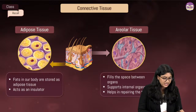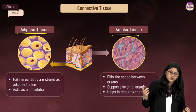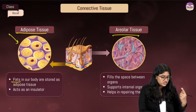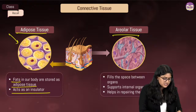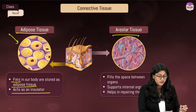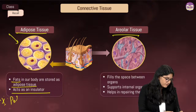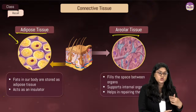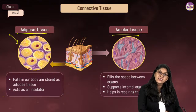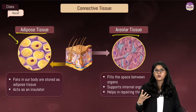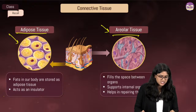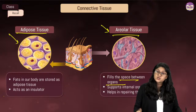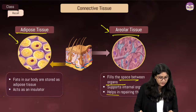Last but not the least, let's talk about connective tissue. Adipose tissue stores fat in our body and acts as an insulator — the polar bear question usually comes from here. Areolar tissue fills the space between organs and plays an important role in supporting internal organs and helping repair tissues. Both are super important.